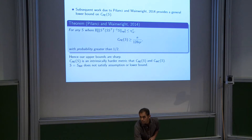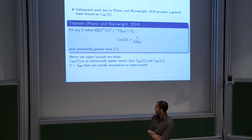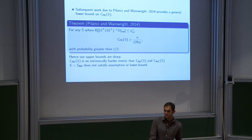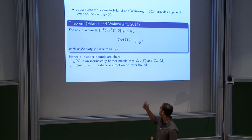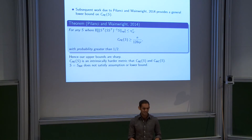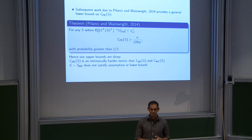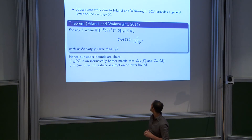Audience question about the 50% probability: you can make the constant larger and the probability closer to one — these constants are very loose for both upper and lower bounds. The upper bounds are based on concentration-of-measure arguments and the lower bounds use information theory techniques.